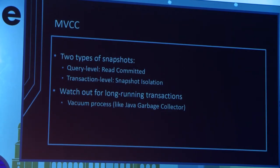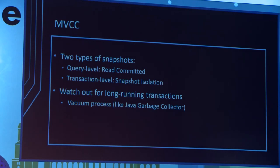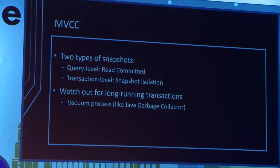In MVCC there are two modes depending on where you place the timestamp reference. If the reference is the start of the query, you get read committed. If you place the timestamp at the beginning of the transaction, you get snapshot isolation — a quite strong isolation level, but not as strong as serializable. Of course, since you're soft-deleting and keeping multiple versions, you need a garbage collector process — called vacuum in PostgreSQL — to reclaim old tuples no longer referenced. You have to watch out for long-running transactions, because those old tuples won't be reclaimed.